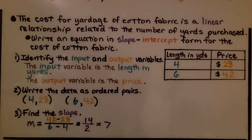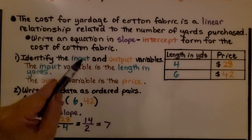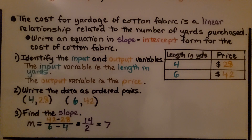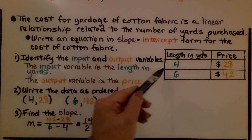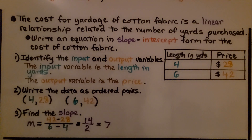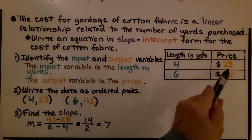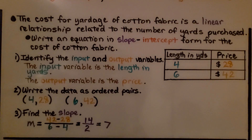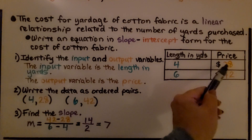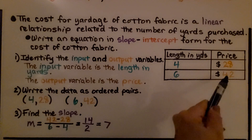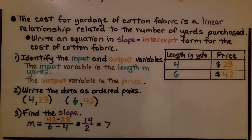We identify the input and output — that's the x and y variables. The input variable is the length in yards, and the output variable is the price. We write the data as ordered pairs: (4, 28) for the first pair and (6, 42) for the second pair.